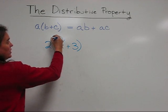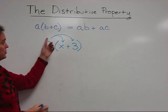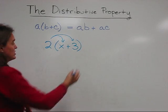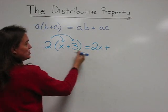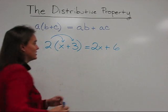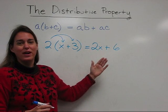You can use the distributive property, which often people denote by using arrows, and say that this is 2 times x plus 2 times 3, which is 6. And that gives us a more simplified expression.